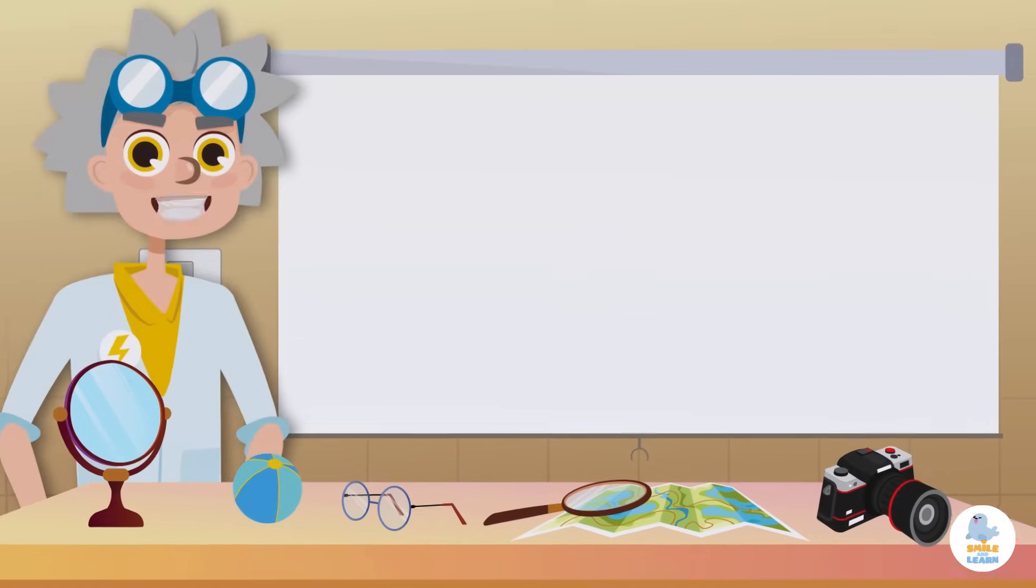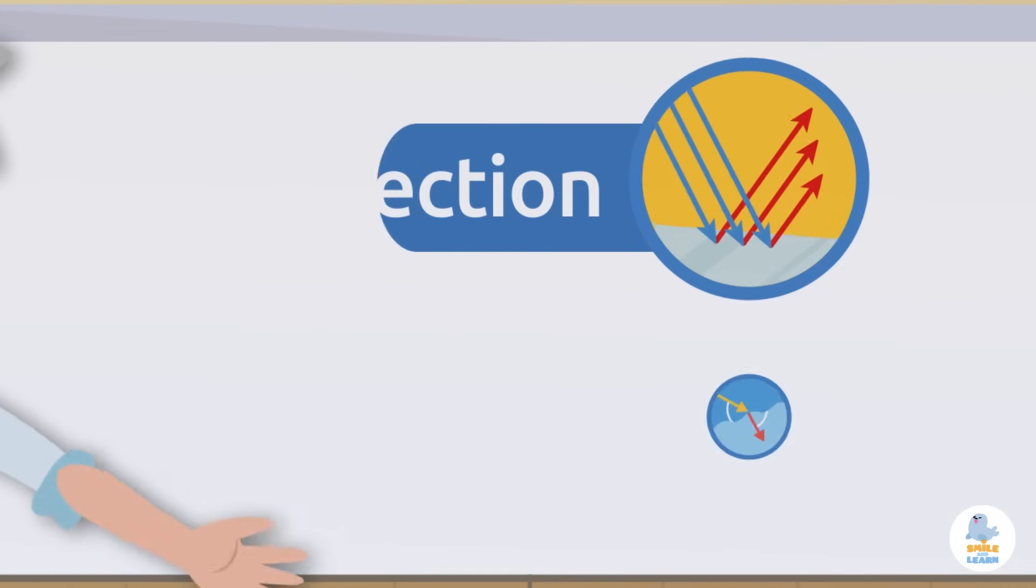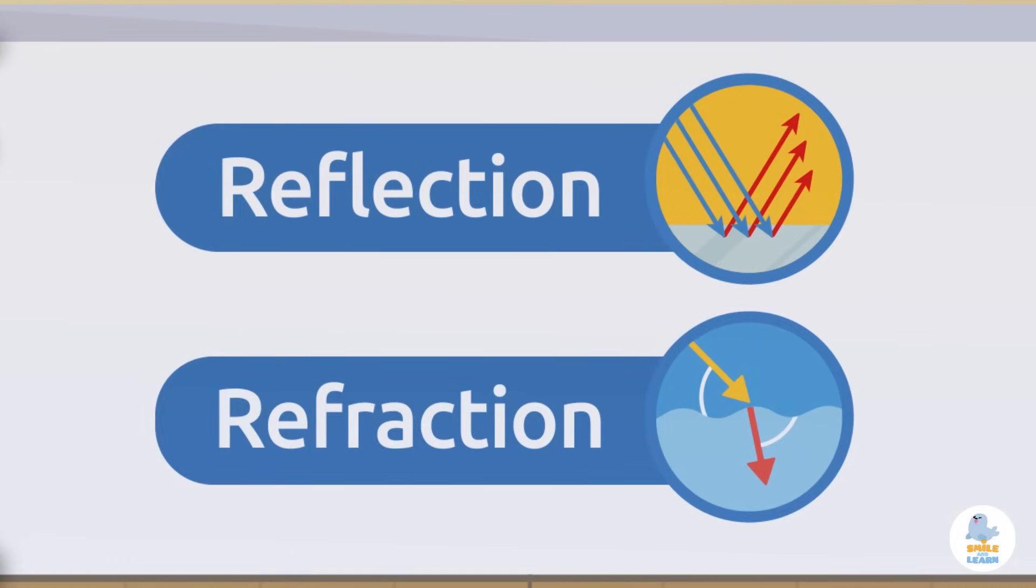Let's start by talking about the main properties of light, which are reflection and refraction.